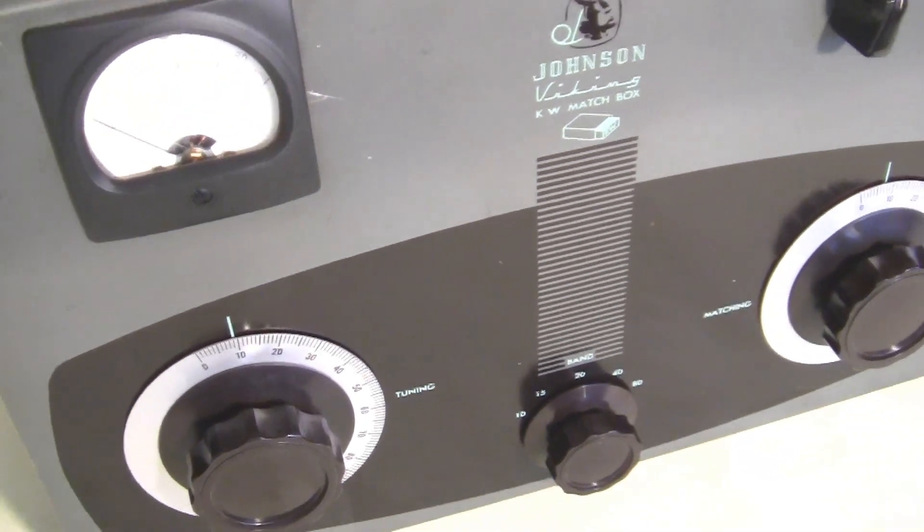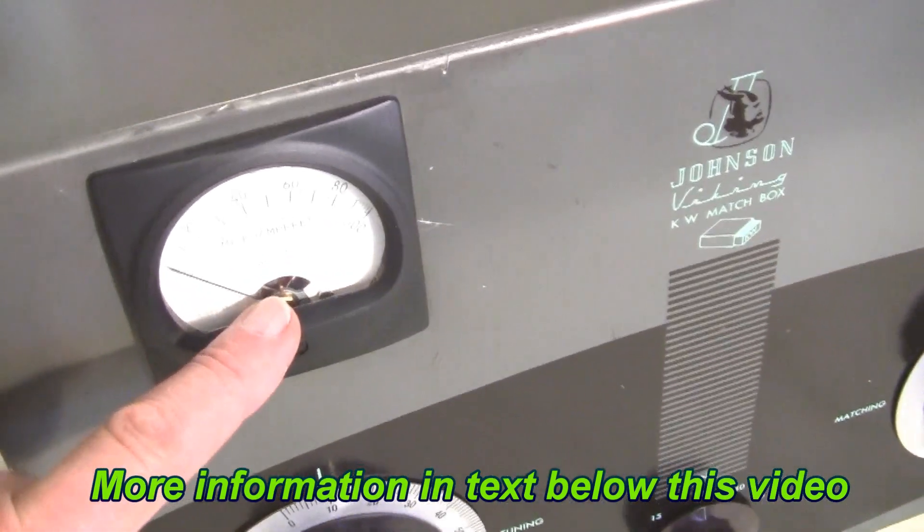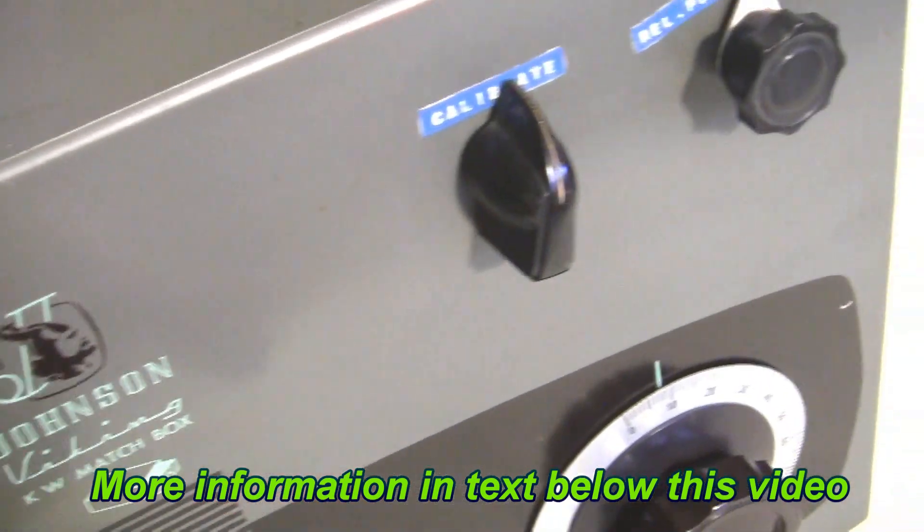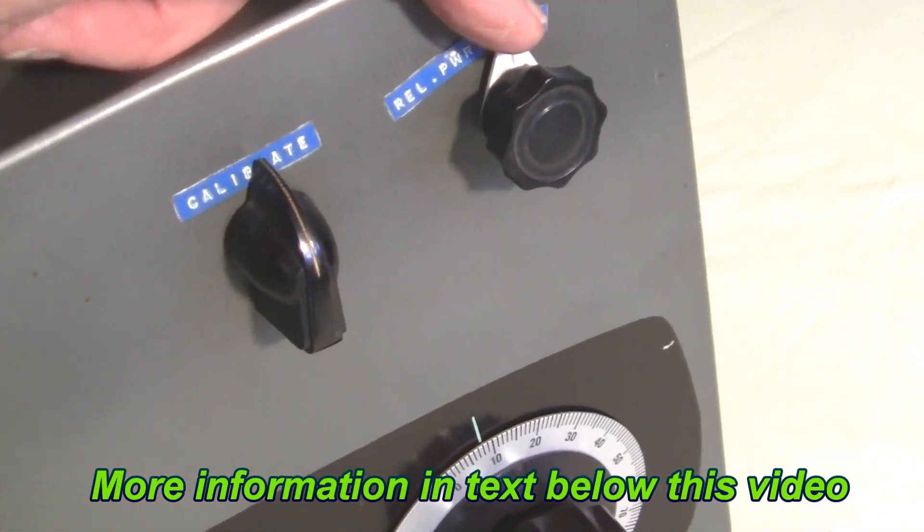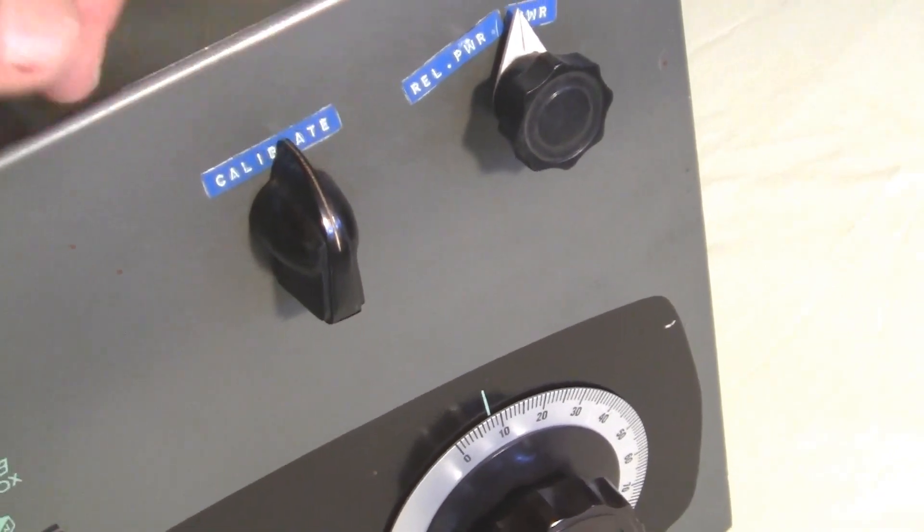This particular Johnson Kilowatt Matchbox Tuner has had built in the monitoring circuitry for forward and reverse power. This meter will read that. And over here, the switch for forward and reverse power and to calibrate the meter.